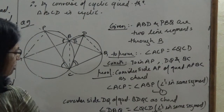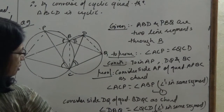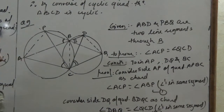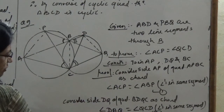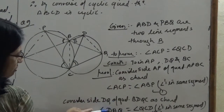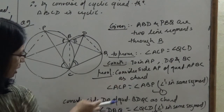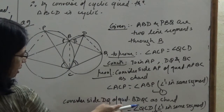From these three equations: angle ACP equals angle ABP, angle DBQ equals angle QCD, and angle ABP equals angle DBQ (vertically opposite). Therefore, by combining all three equations, angle ACP equals angle QCD. Hence proved.